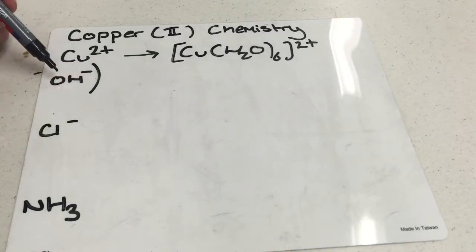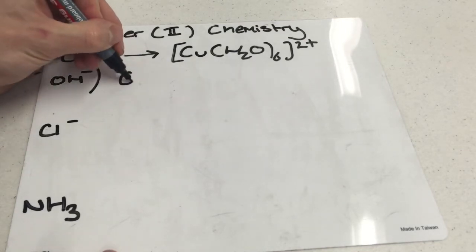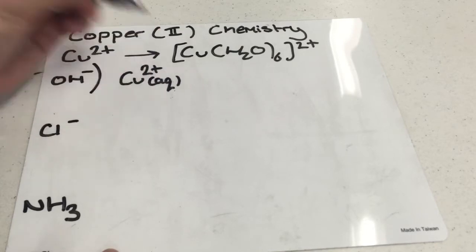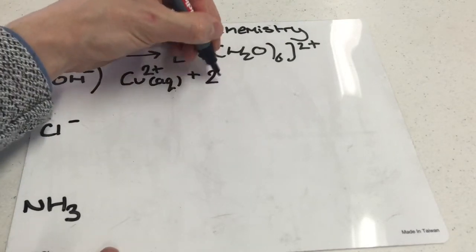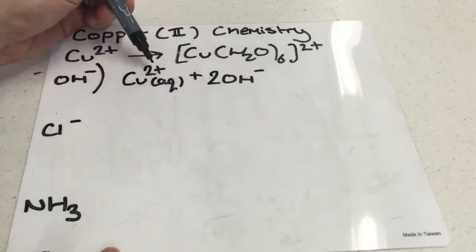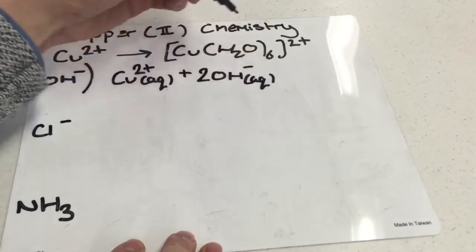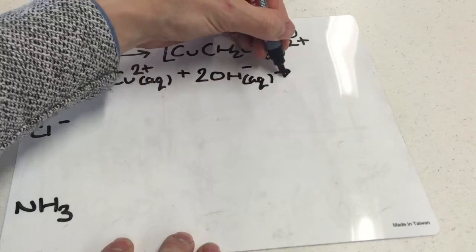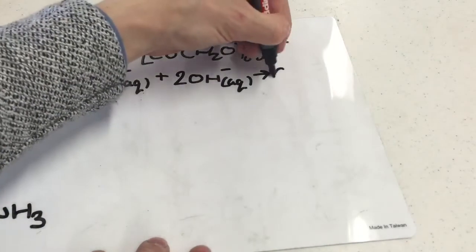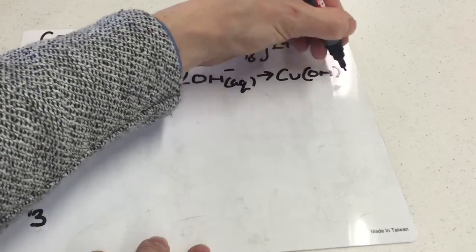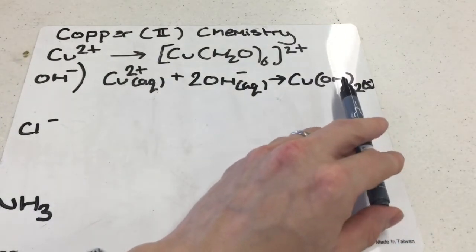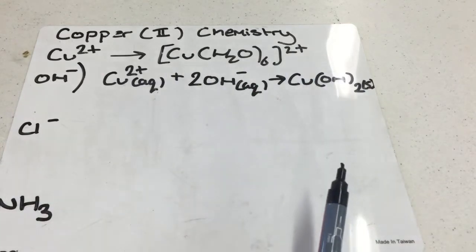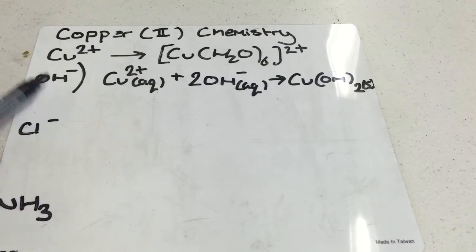For the first reaction, we take the Cu²⁺ ion as aqueous — we don't need to write out the full hexa aqua formation — and react it with 2 moles of OH⁻, also aqueous. We use 2 moles because of the 2+ charge. This gives us a blue precipitate solid. So we go from a blue solution to a blue precipitate. Note: you don't need to include the sodium ions from sodium hydroxide — keep it simple.